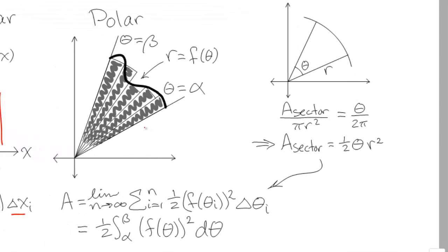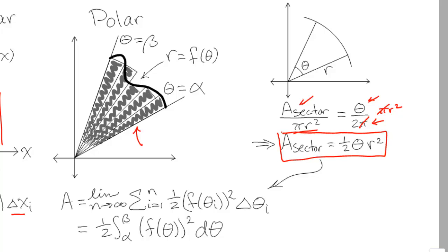With polar coordinates, we need to determine how to find the area of an individual sector. This is not as simple as the area of a rectangle. A sector is a part of a circle, and we can find its area using a proportion. The area of a sector is to the area of the entire circle, pi r squared, as the angle theta is to 2 pi, the angle for the entire circle. So if we bring pi r squared to the other side, the pi's cancel out, and we're left with the area of a sector equals one half theta times r squared.